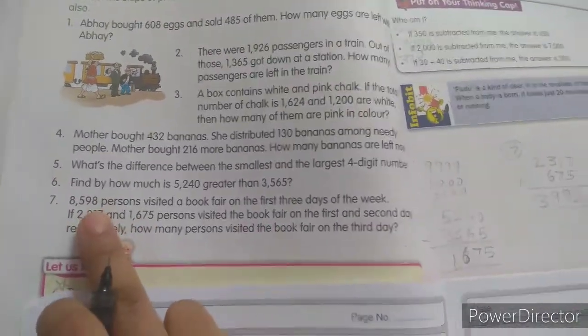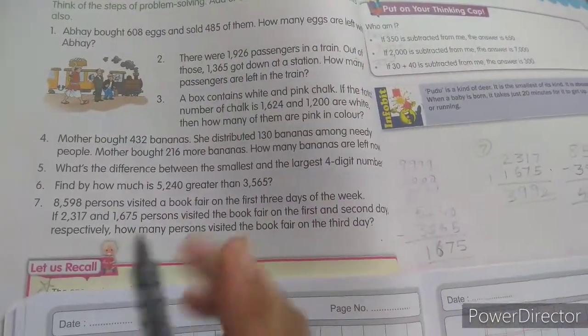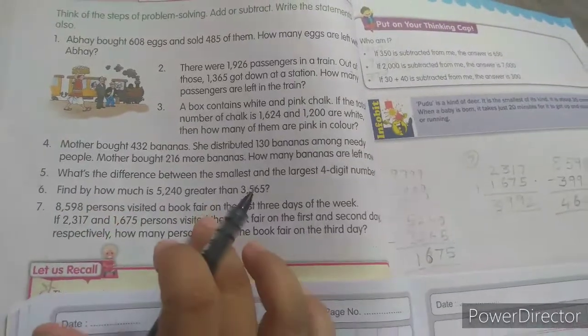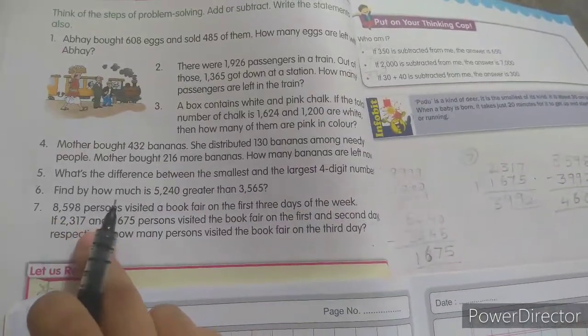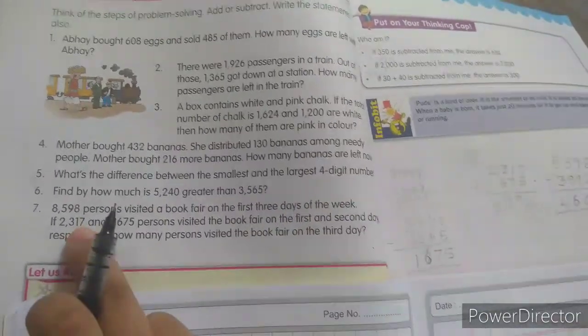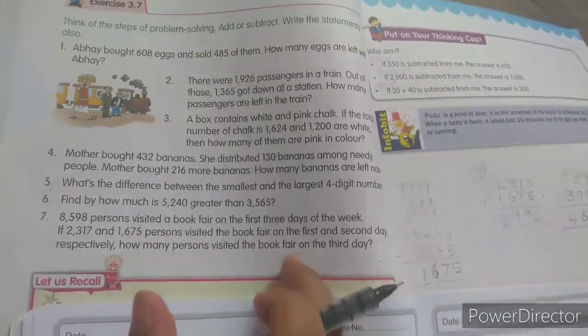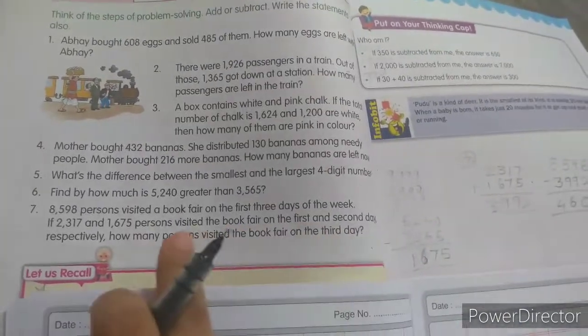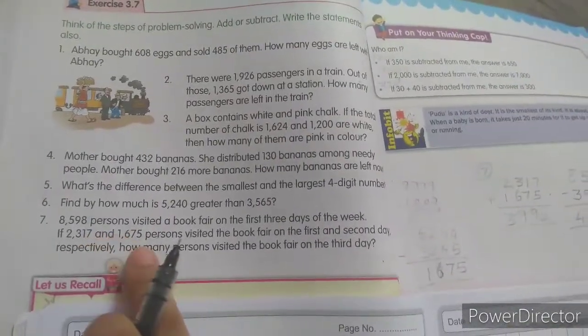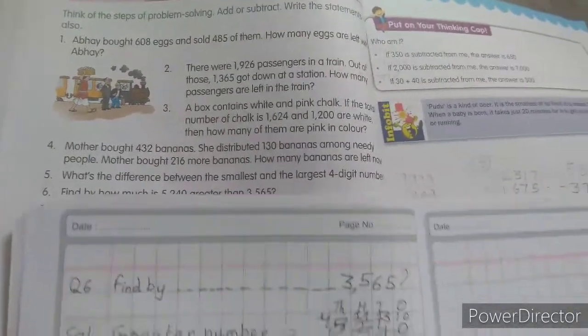Look at question number 7. It says 8,598 persons visited a book fair on the first 3 days of the week. First 3 days, how many people visited? 8,598 is the total number. And how many people visited the book fair in two days? Third day we are not given, so how many people visited third day? We have to find out. So for that we have to do it in two steps. First we will see how many people went in two days. For that, what do we have to do? We have to add.